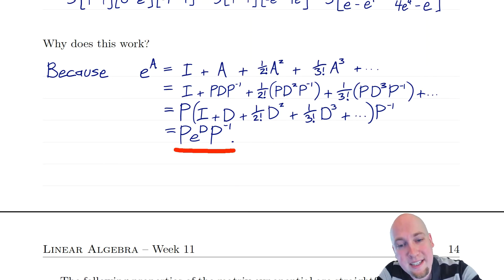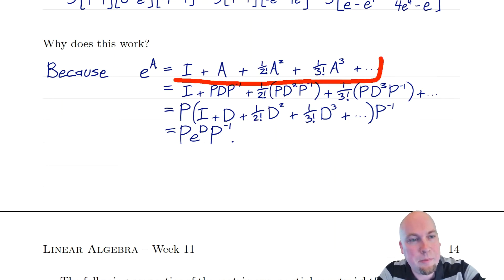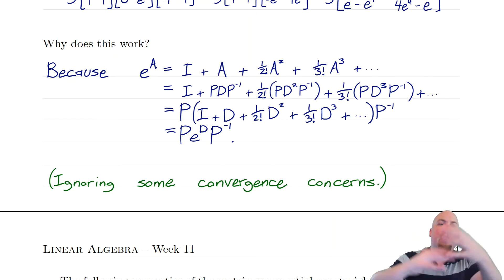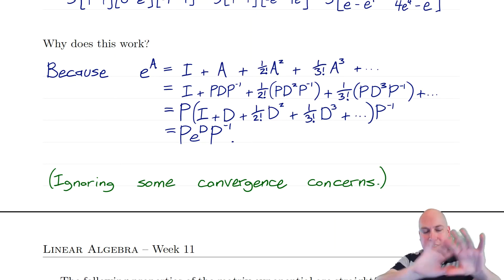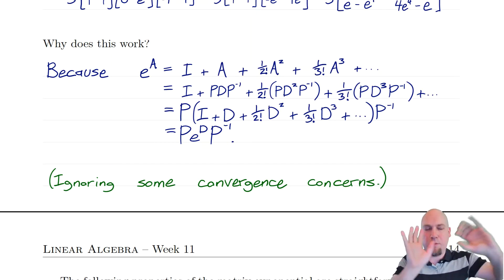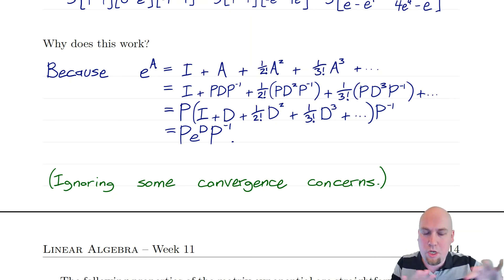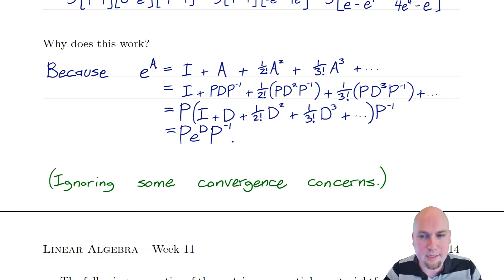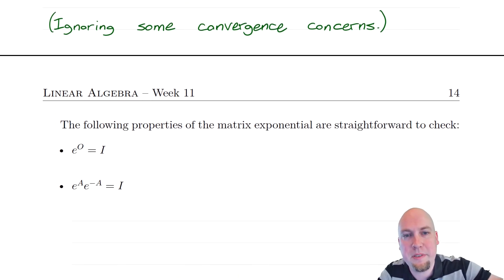This is how you actually compute the exponential of a matrix, even though the infinite sum is the formal definition of it. Throughout all of this we're ignoring some convergence concerns — that's a topic for another class, since adding up infinitely many things can sometimes go wrong. It's not going to go wrong in any of the situations we're doing in this class, so we're going to ignore convergence concerns for the purposes of this course.